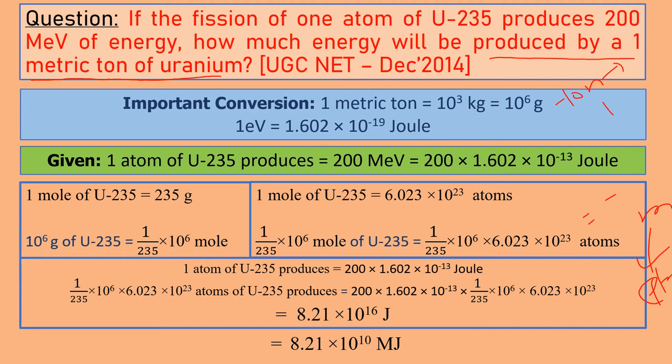As you know, one mole of uranium-235 is equal to 235 grams. How much do we convert from 1 ton? 10^6 gram of uranium is equal to 1 divided by 235 times 10^6 mole.